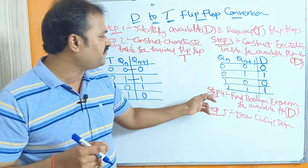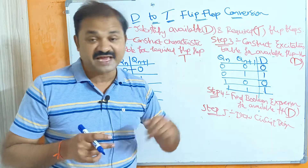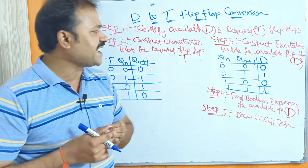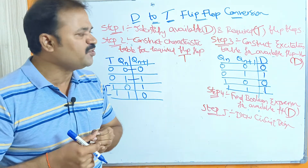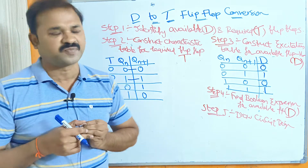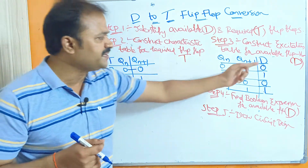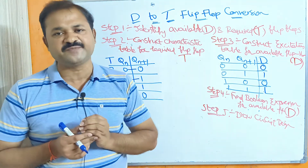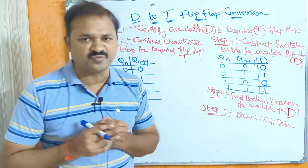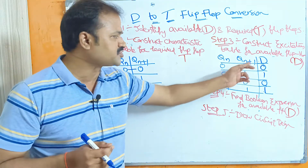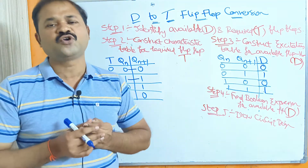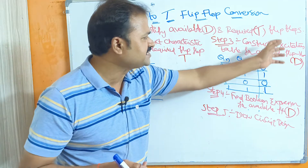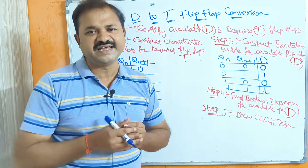Steps 3 and 4 are based upon the available flip-flop. Step 3 is to construct the excitation table for the available flip-flop, which is the D flip-flop. Here Qn and Qn+1 are the inputs, and D is the output. With 2 inputs we have 4 combinations, and the excitation table for D flip-flop is very simple.